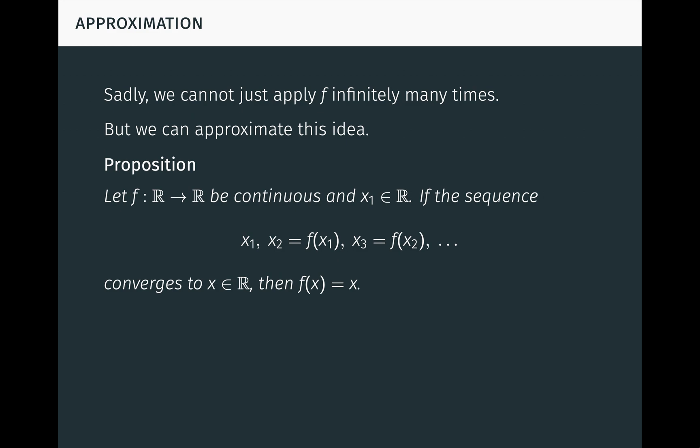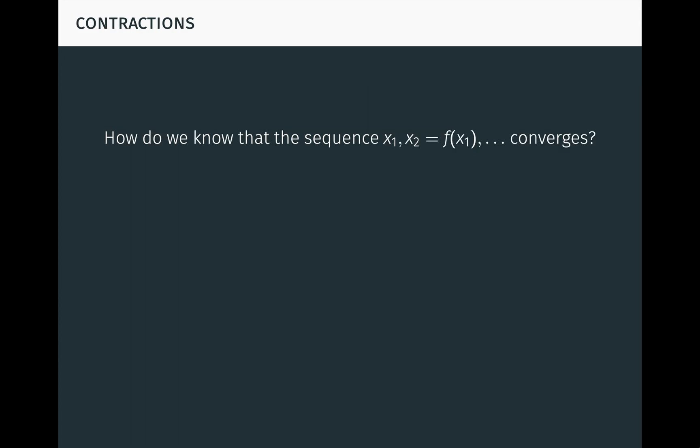We have a proposition. Let f from r to r be continuous and x1 in r be an arbitrary point. If the sequence of points x1, x2, which is defined to be f of x1, x3, which is defined to be f of x2, and so on, converges to the point x in r, then f of x is equal to x. That is, x is a fixed point of f. The proof is a one-liner using convergence of the sequence and continuity of f. But how do we know that the sequence of points converges?